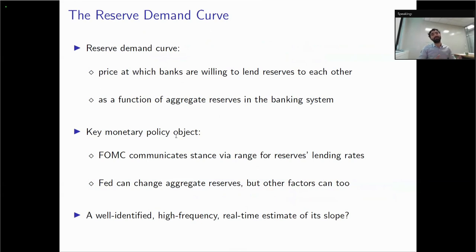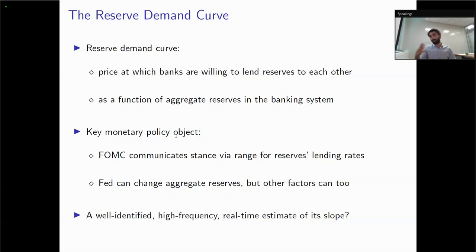As the title suggests, the paper is about banks' demand for reserves — specifically the reserve demand curve, which is the price at which banks are willing to borrow and lend reserves with each other as a function of aggregate reserves. This is a key monetary policy object for two reasons. First, when the FOMC communicates its monetary policy stance, it specifies a range for the rates at which banks lend and borrow reserves. Second, the Fed can change aggregate reserves, but other factors outside the Fed's control can too — so it becomes important to know where you are on this curve and, more importantly, its slope.